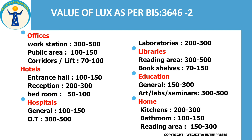Talking about homes: the kitchen area has a lux value of 200 to 300. Bathrooms have a lux value of 100 to 150. Reading areas require more lux, so it's 150 to 300 lux. So these were just some of the lux values which are being maintained in different places of different buildings according to BIS 3646.